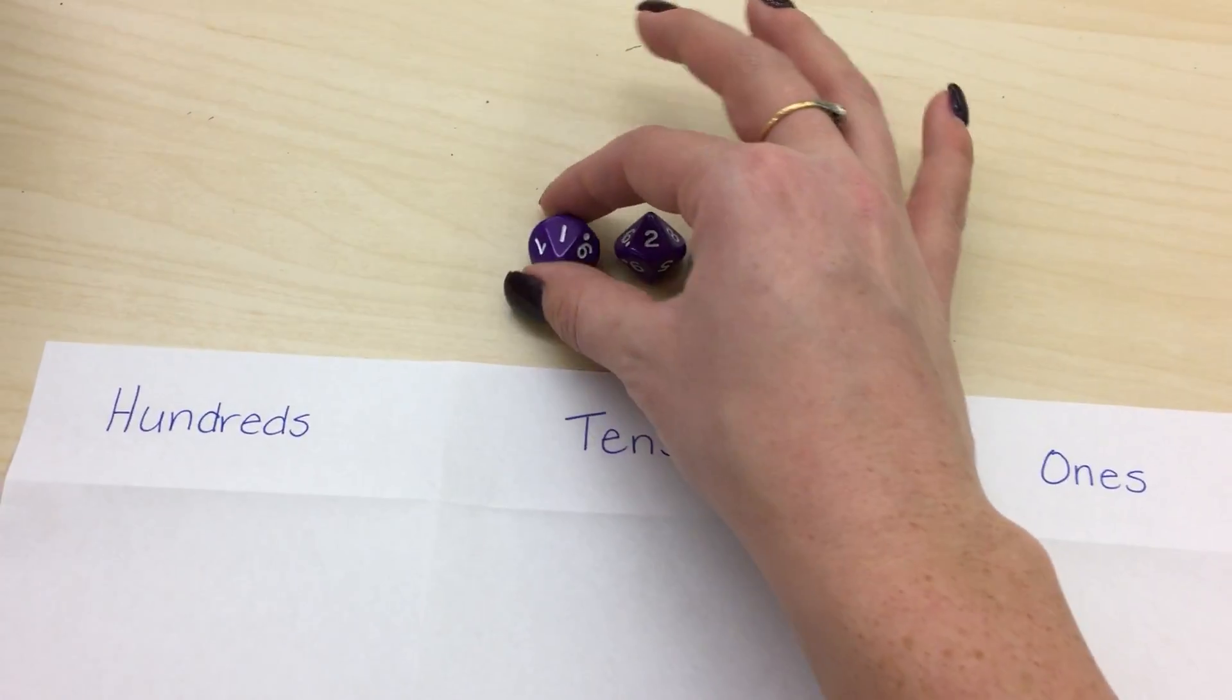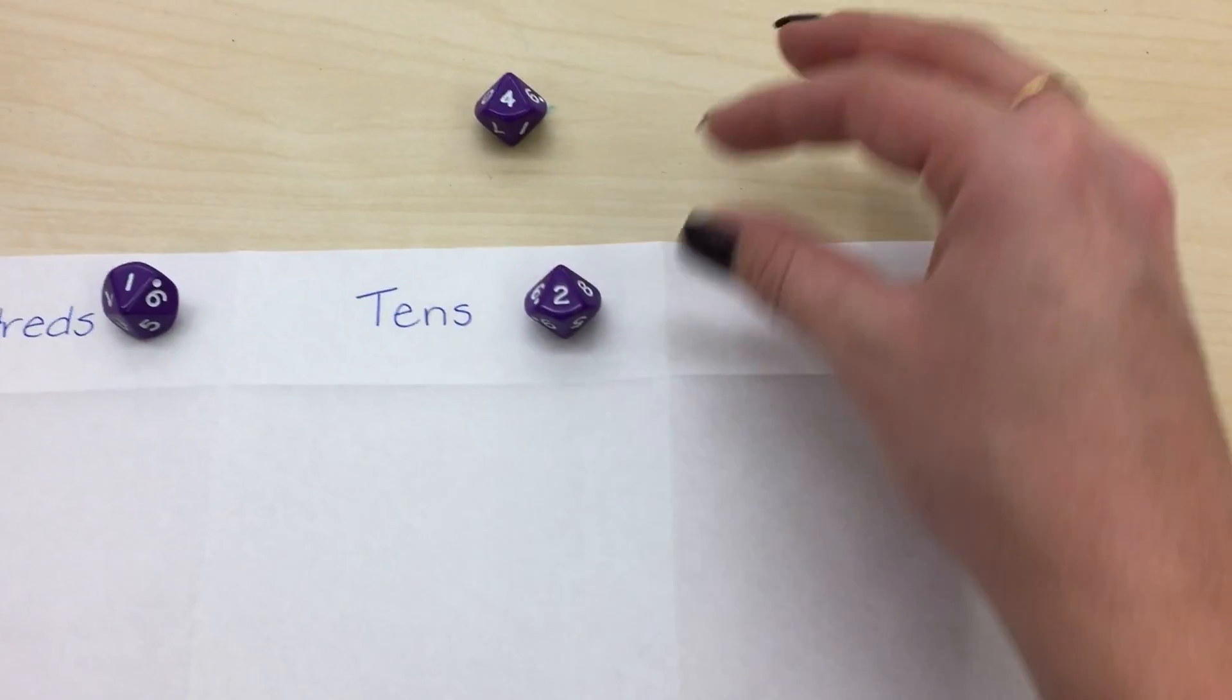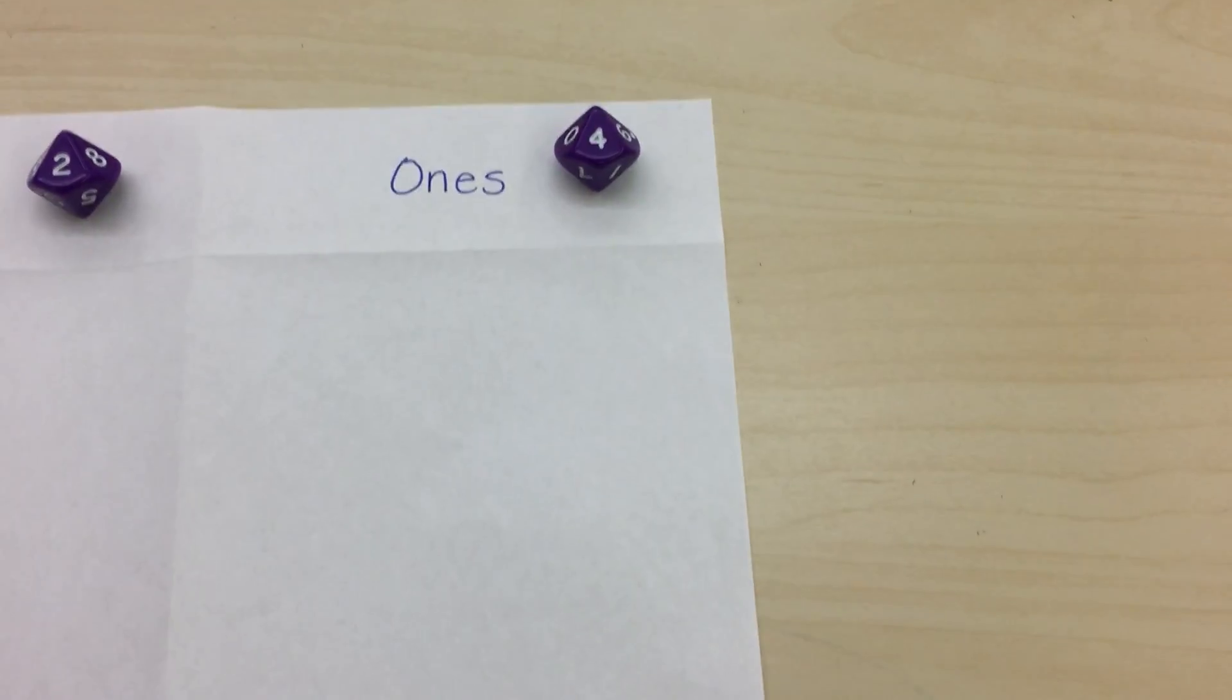When I look at 124, I know that the 1 is in the hundreds place, the 2 is in the tens place, and the 4 is in the ones place.